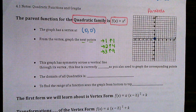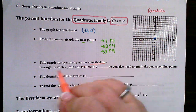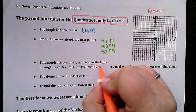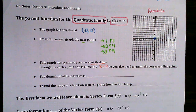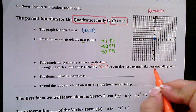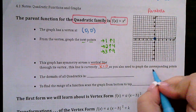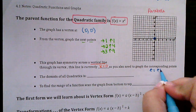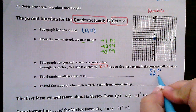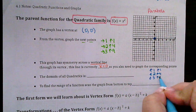This graph has symmetry across a vertical line through its vertex. The line is currently at x equals 0. So you also need to draw the corresponding points on the left side: left 1 up 1, left 2 up 4, and left 3 up 9.